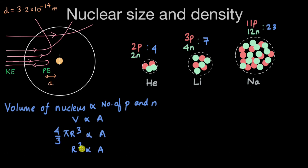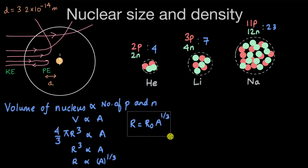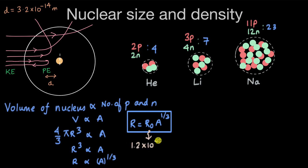Taking cube roots of both sides, r is proportional to A^(1/3). When we remove the proportionality, we add a constant R₀, giving: R = R₀ × A^(1/3). This expression gives us the radius of a nucleus. The constant R₀ was verified experimentally to be around 1.2 × 10⁻¹⁵ meters, which we can also write as 1.2 femtometers (or fermi meters), where 1 fm = 10⁻¹⁵ meters.